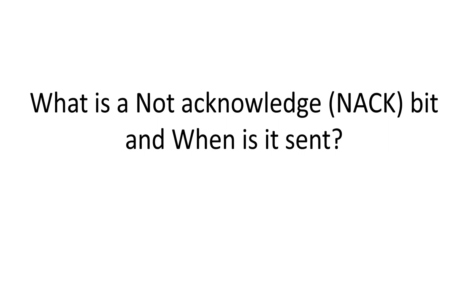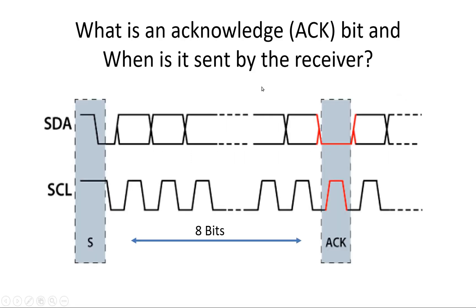Another question I asked in our previous video was: what is a not-acknowledge bit, or NACK bit, and when is it sent? In our previous video we discussed that after transmitting 8 bits, the transmitter expects an acknowledge bit from the receiver. During the ninth clock bit, the transmitter releases control of the bus, so the SDA line tends toward logic high. But the receiver is supposed to force it to zero. If the receiver does not apply zero, the SDA line will remain high during the ninth clock bit.